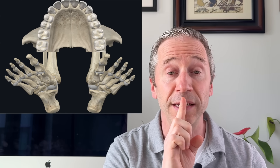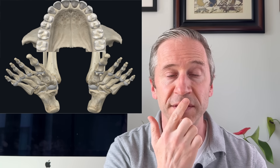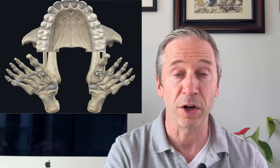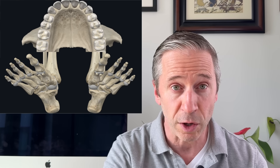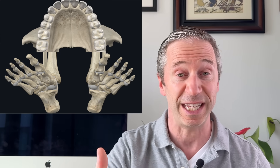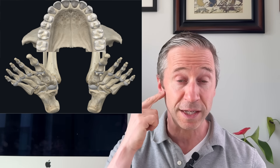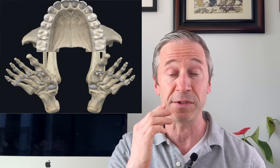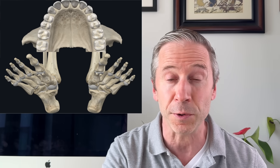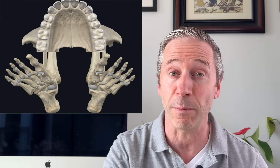Molars are heels. Canines and incisors are going to be like toes. You have sensory input in the back of your body — molars and heels — and also in the front — incisors, front teeth, and toes — and they tend to match up. So what happens if you lose these really important sensory associations?